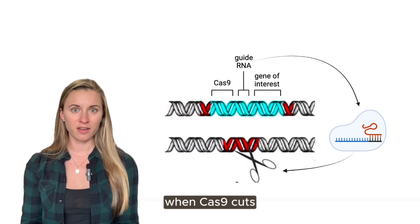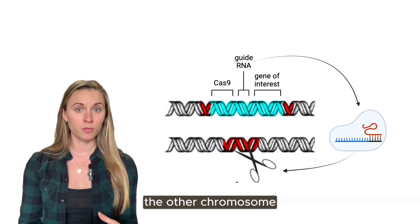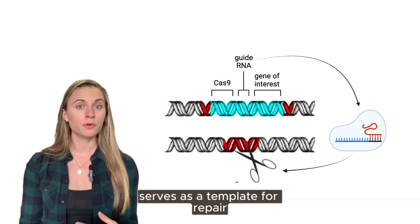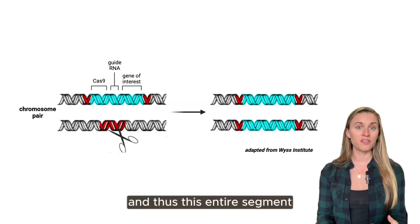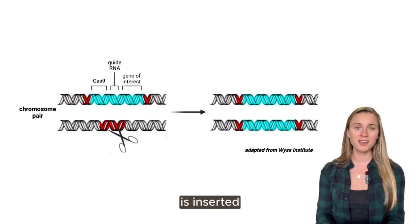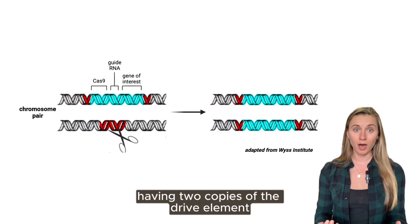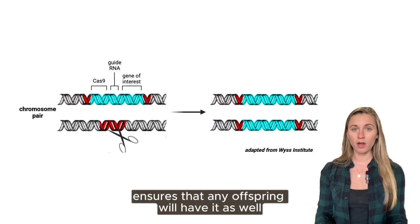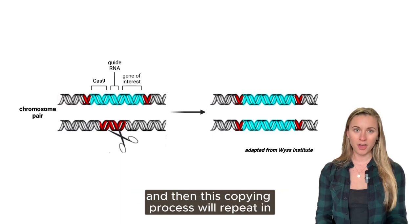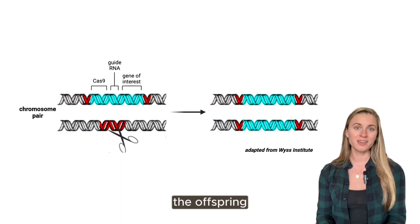When Cas9 cuts, the other chromosome serves as a template for repair, and thus this entire segment, including the target gene, is inserted. Having two copies of the drive element ensures that any offspring will have it as well, and then this copying process will repeat in the offspring. So in order to kick off the gene drive, the modified organisms are simply released into the environment.